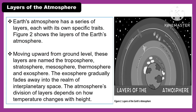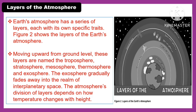The following are the layers of the atmosphere. Earth's atmosphere has a series of layers, each with its own specific traits. Figure 2 shows the layers of the Earth's atmosphere. Moving upward from ground level, these layers are named the troposphere, stratosphere, mesosphere, thermosphere, and exosphere. The exosphere gradually fades away into the realm of interplanetary space. The division of layers depends on how temperature changes with height.